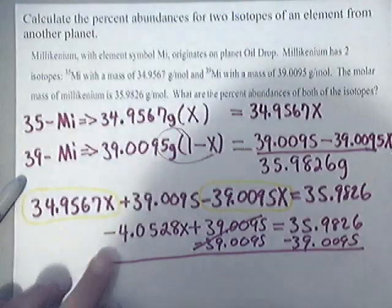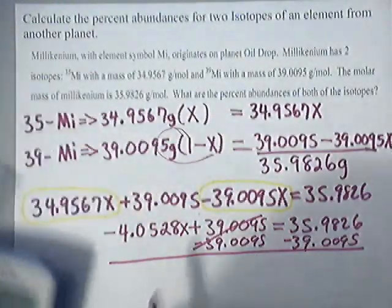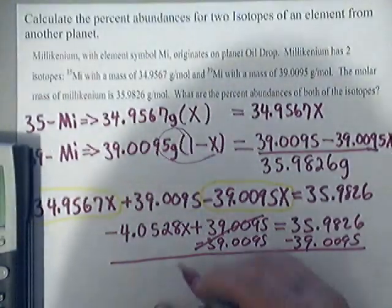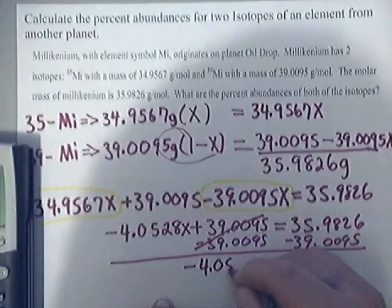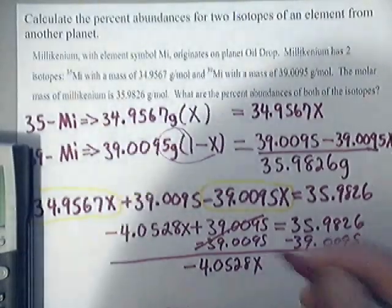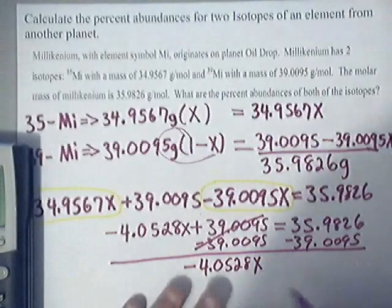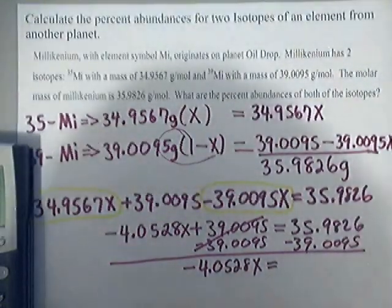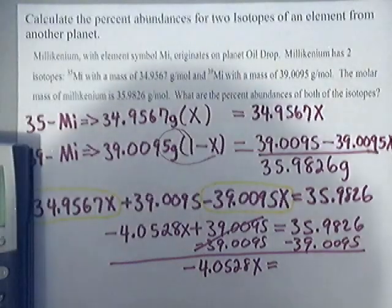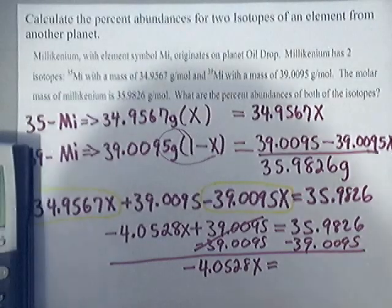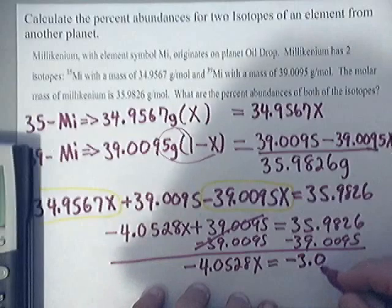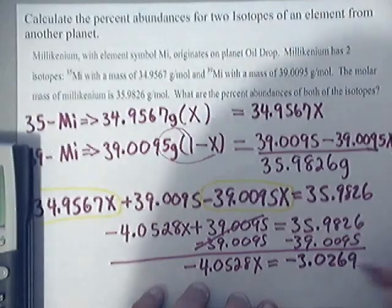Sorry, math teachers. Anyway, that would give us negative 4.0528x on the left side equals some negative number here, because we have 35.9826 minus 39.0095, which is negative 3.0269.